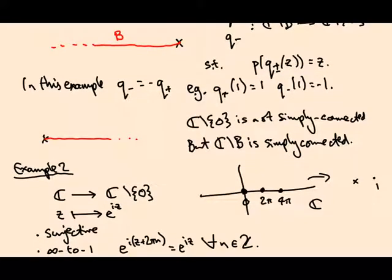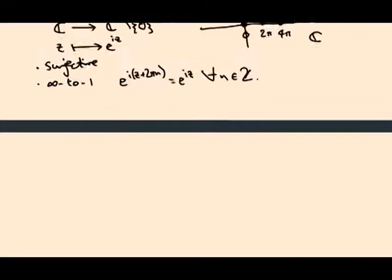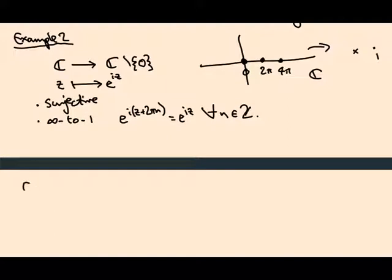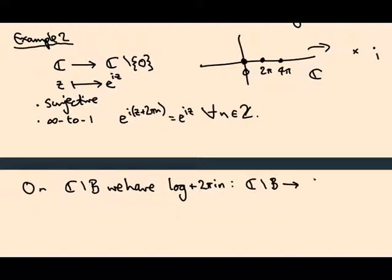Nonetheless, we can play a similar trick and make a branch cut and define an inverse. This time we get infinitely many inverses. On ℂ minus a branch cut, we have what I'll call the usual log plus 2πin.